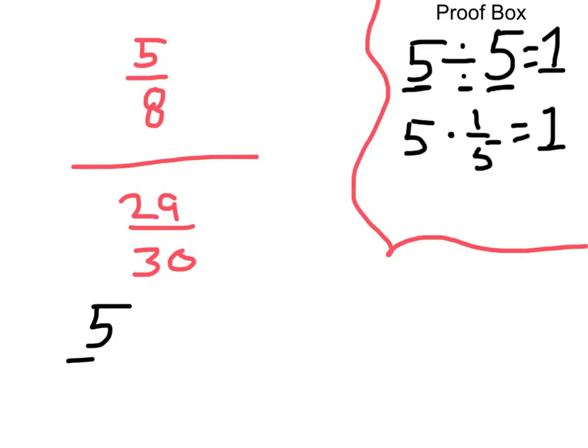5/8, and instead of dividing, we're going to change the sign to multiply, and we're going to flip the bottom, the denominator, to get the reciprocal. So, 29 over 30, the reciprocal of that is 30/29.